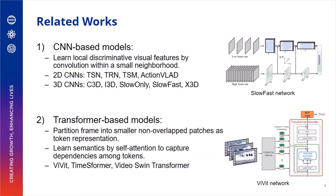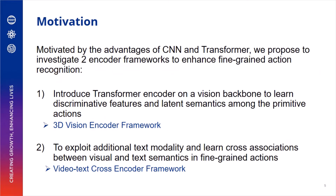In video action recognition, CNN has been the norm for backbone architecture, which learns local discriminative visual features by convolution within a small neighborhood. Transformer-based models partition frames into smaller non-overlapping patches to form token representations, and learn semantics by applying self-attention to capture global dependencies among tokens. Motivated by the advantages of CNN and Transformer, we propose to investigate two encoder frameworks to enhance fine-grained action recognition.